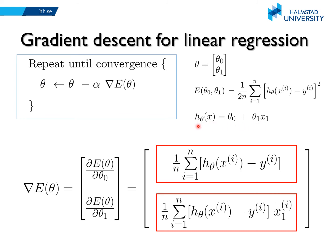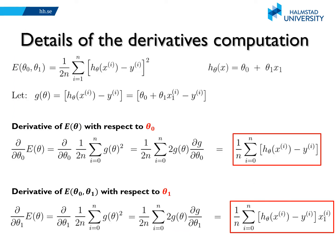Back to our linear regression example: our hypothesis function has one feature x1 and two parameters theta 0 and theta 1. Our cost function is the mean squared errors cost. This is our gradient descent algorithm as discussed previously. The derivative of the cost function with respect to theta 0 is this one, and the derivative with respect to theta 1 is this one — so this is the gradient. You can check on this slide how we computed these derivatives — please pause the video if you want to read in more detail how we computed them.